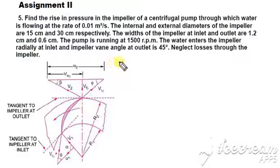The dimensions given are the internal and external diameters of the impeller. So that is D1, internal diameter, which is 15 centimeters, so you have 0.15 meter. And external diameter, that is D2, which is 0.3 meter.